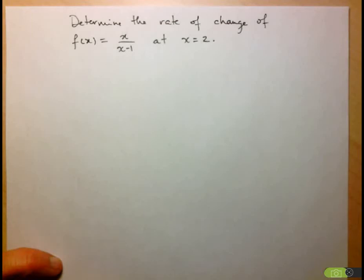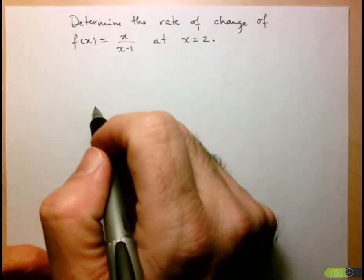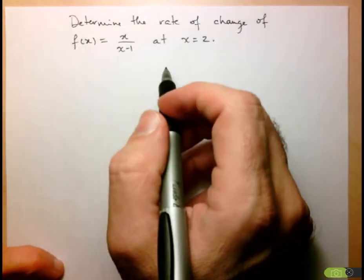Hi folks, we're going to look at a second example of determining the rate of change of a function using our limit definition. Here we want to find the rate of change of a rational function, x over x minus 1, and we want to find that at x equals 2.